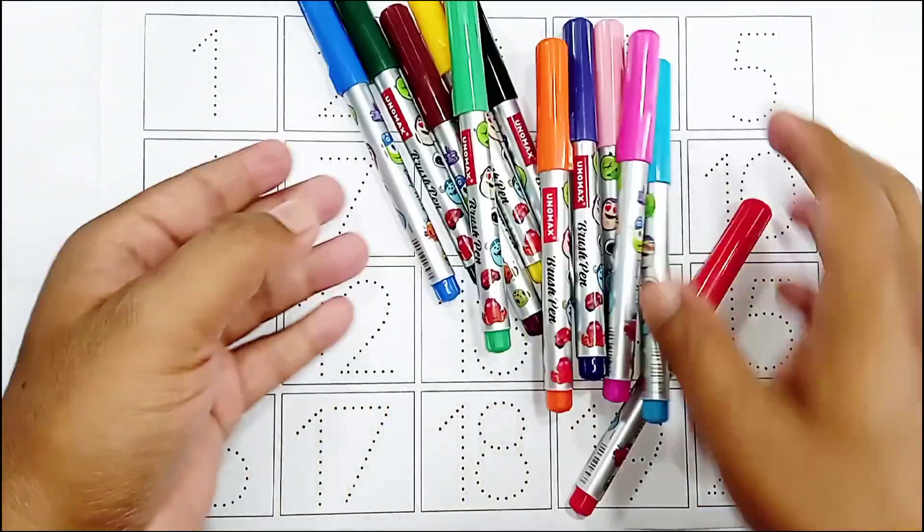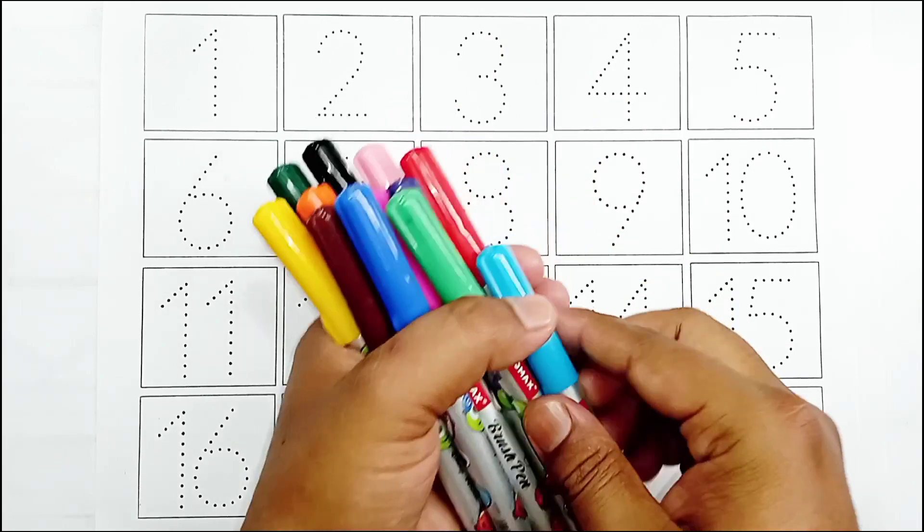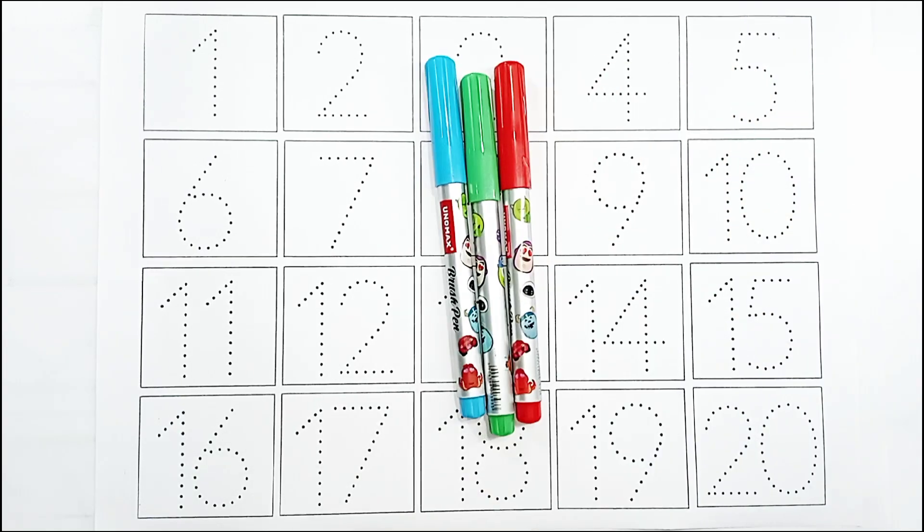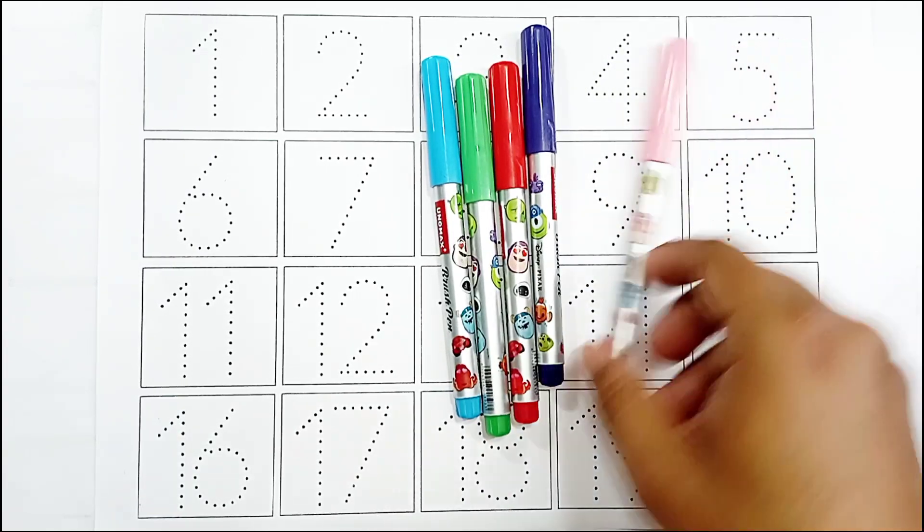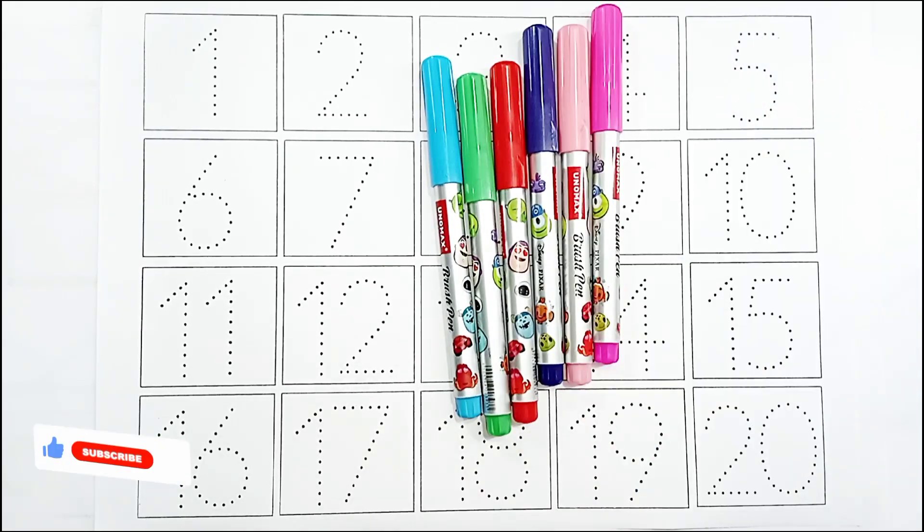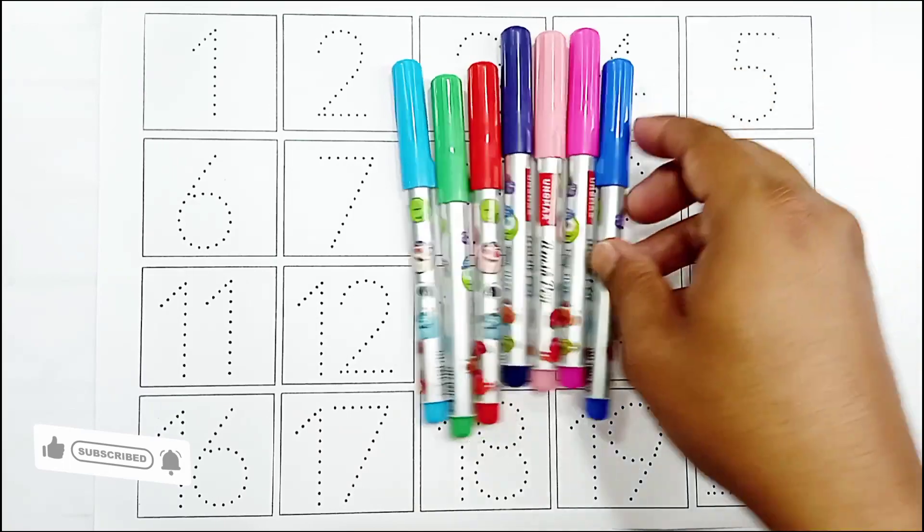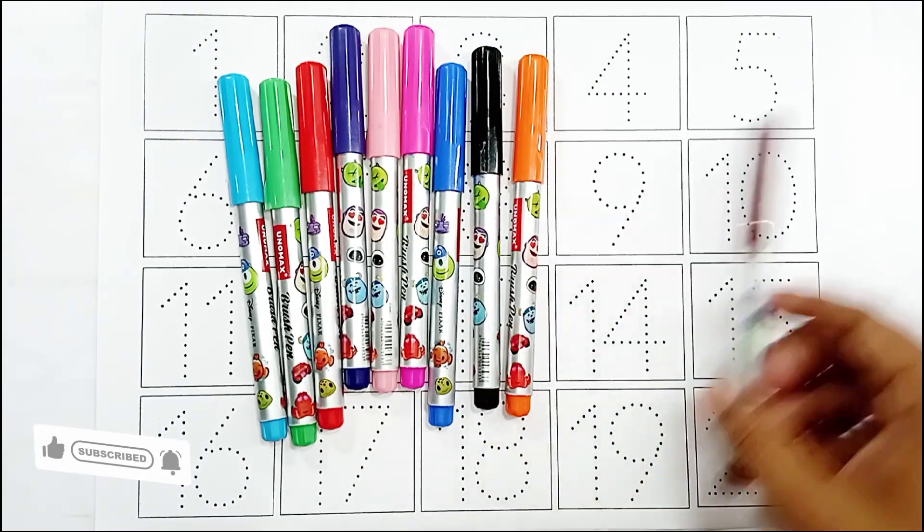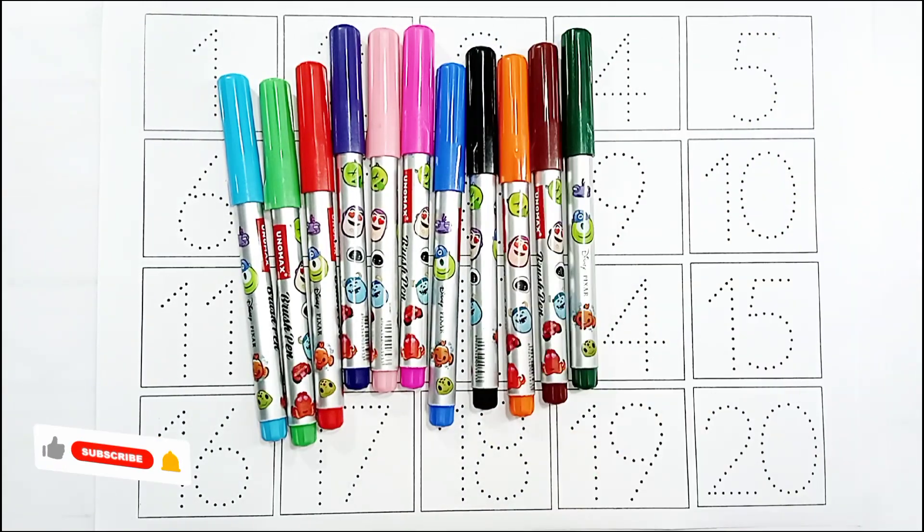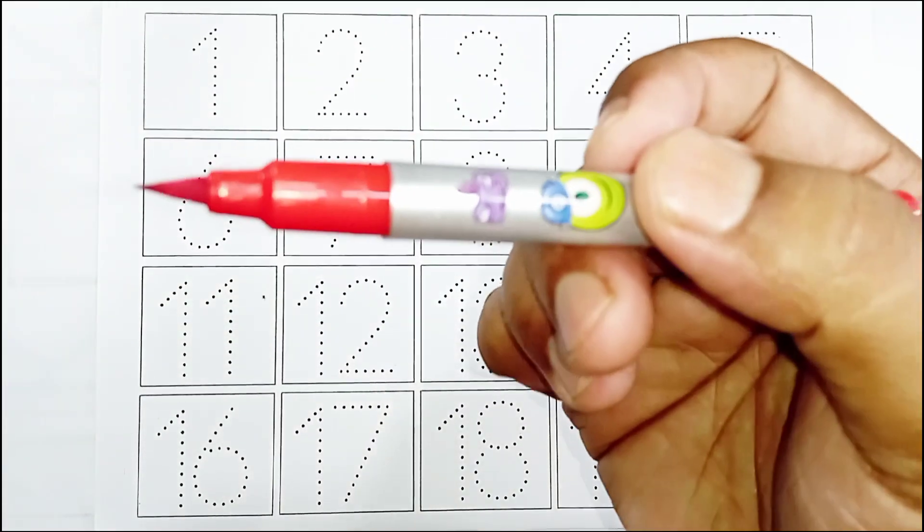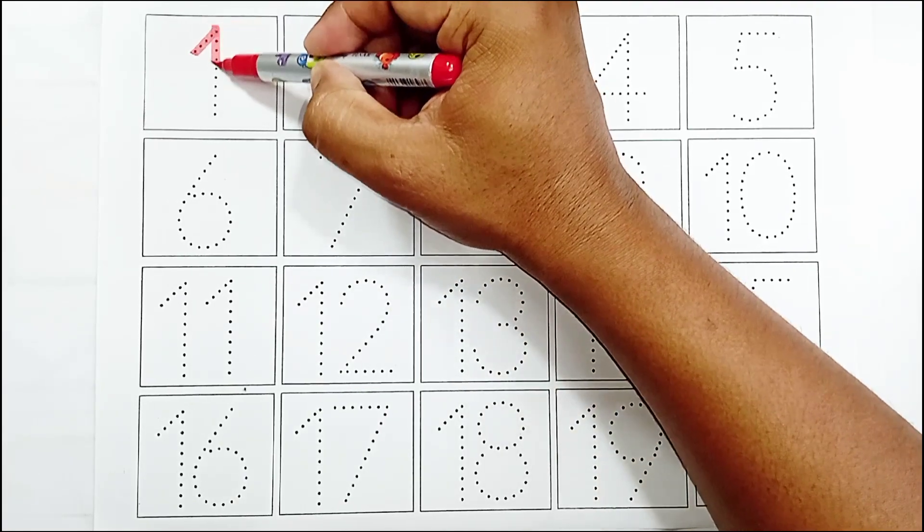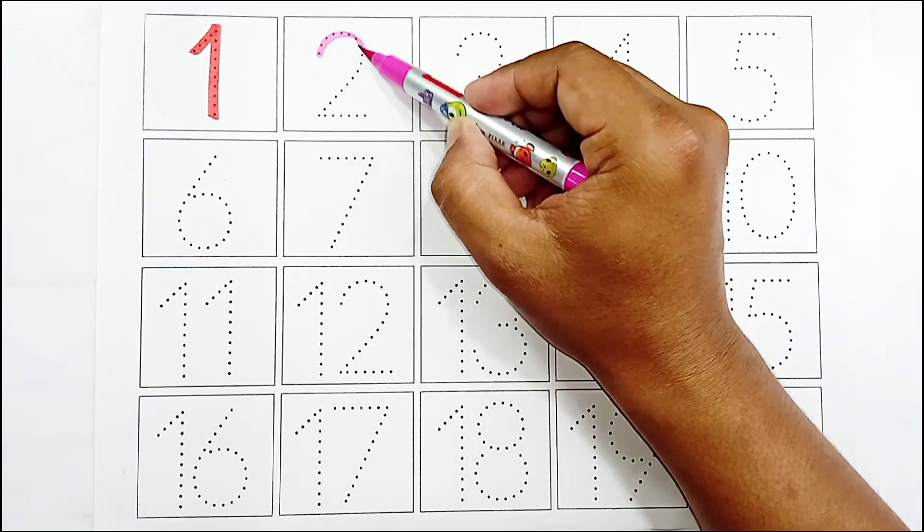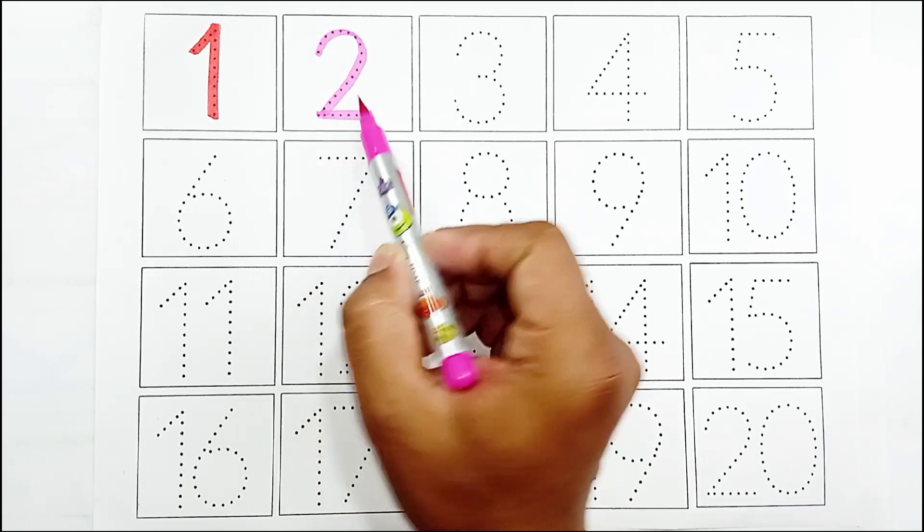Hello kids, let's learn colors. Light blue color, light green color, red color, violet color, light pink color, pink color, blue color, black color, orange color, brown color, green color, yellow color, red color.